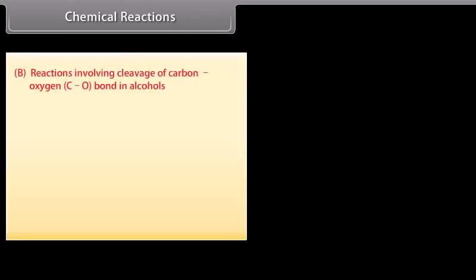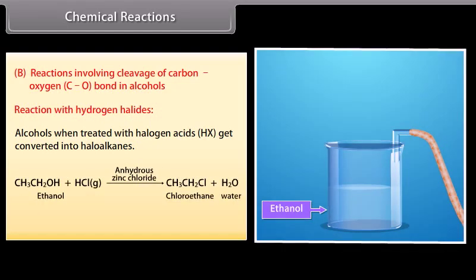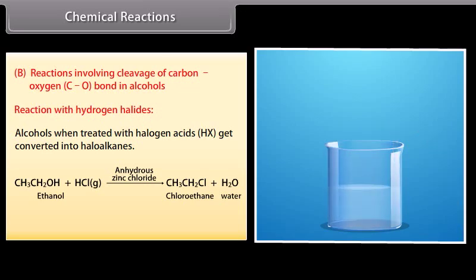Reactions involving cleavage of carbon-oxygen bond in alcohols — reaction with hydrogen halides: alcohols, when treated with halogen acids, get converted into alkyl halides. When hydrochloric acid gas is passed through ethanol in the presence of anhydrous zinc chloride, it forms chloroethane and water.